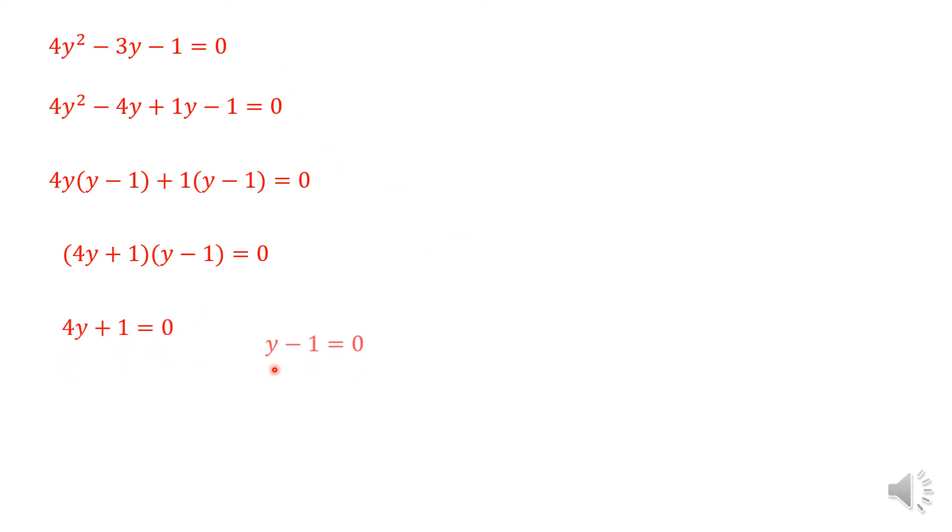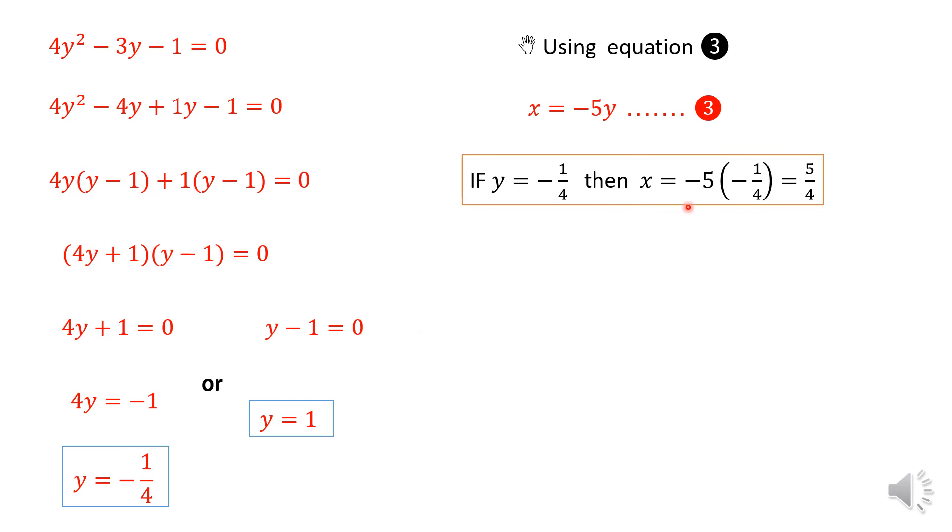Then you will realize that there are two values for Y. One being Y = 1, the other Y = -1/4. So now, I have got these solutions for Y. But I'm also looking for the values of X, the corresponding values of X, if Y is -1/4, or if Y = 1. So I will use this equation to find the corresponding values of X. When Y = -1/4, you realize that X = 5/4. Or, if Y = 1, then substituting that for X, you will get that X = -5. These are the solutions to these equations.